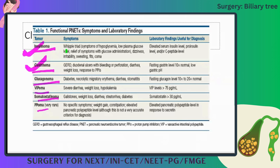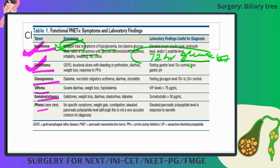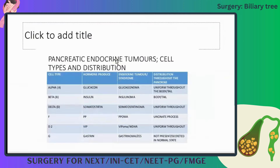To summarize insulinoma: Whipple's triad consists of symptoms of hypoglycemia, low glucose levels, and relief of symptoms with glucose administration. The diagnostic test is the 72-hour glucose test — not 24 hours, but three days, 72 hours.